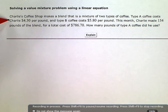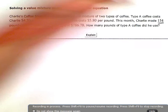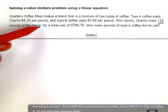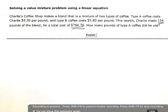This month, Charlie made 154 pounds of the blend. So I have a total of 154. That's going to help me out. For a total cost of $786.70, how many pounds of type A coffee did he use?